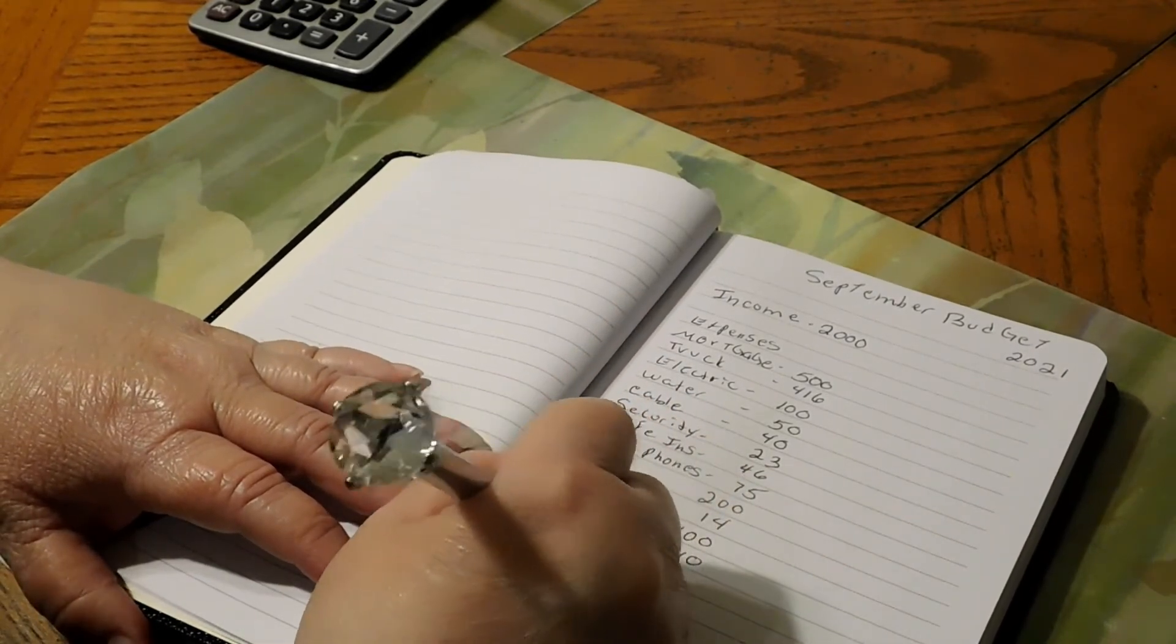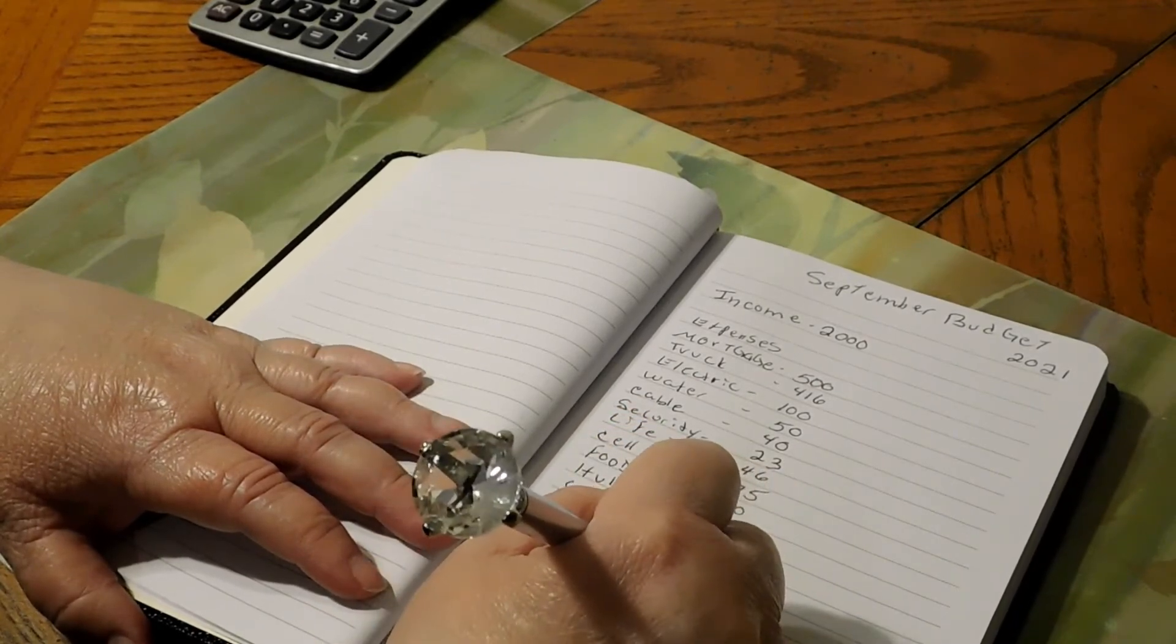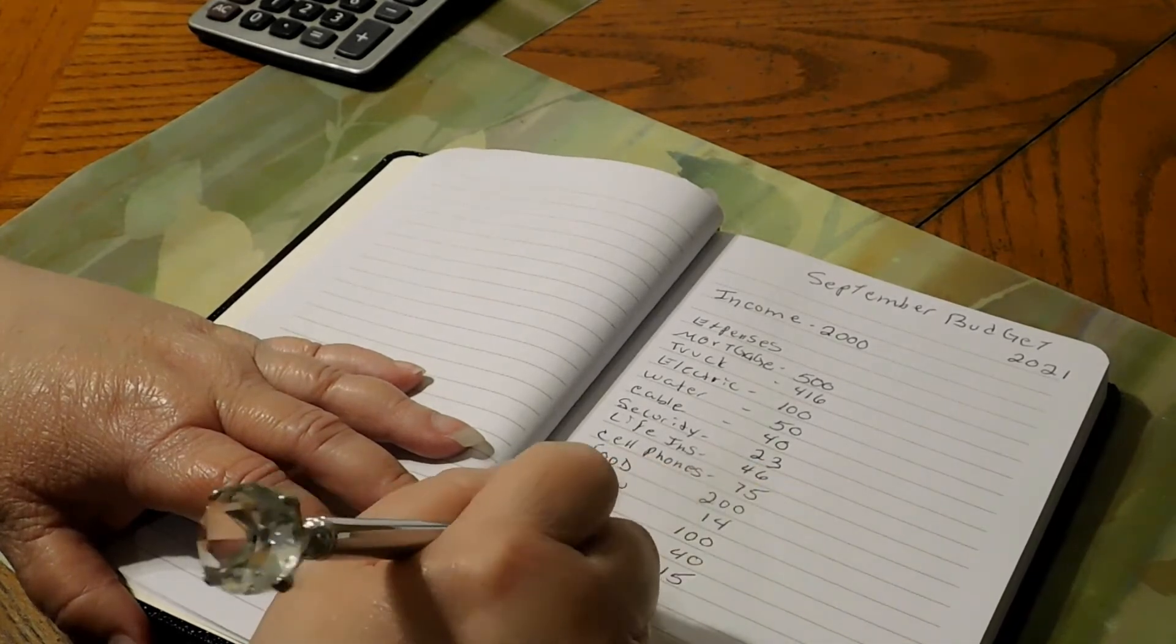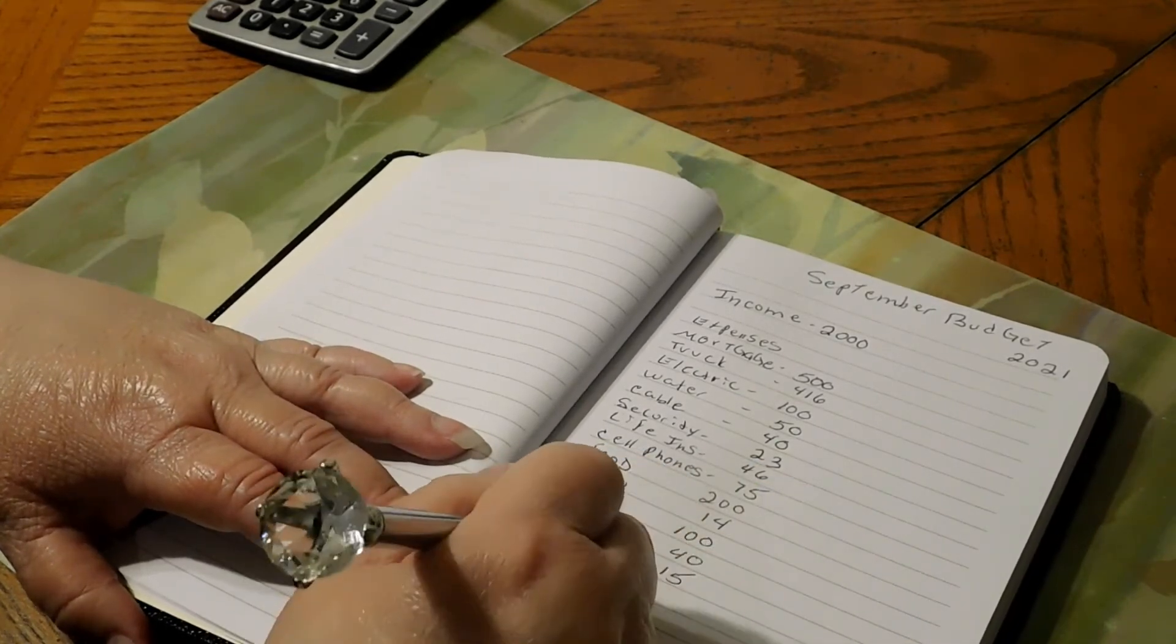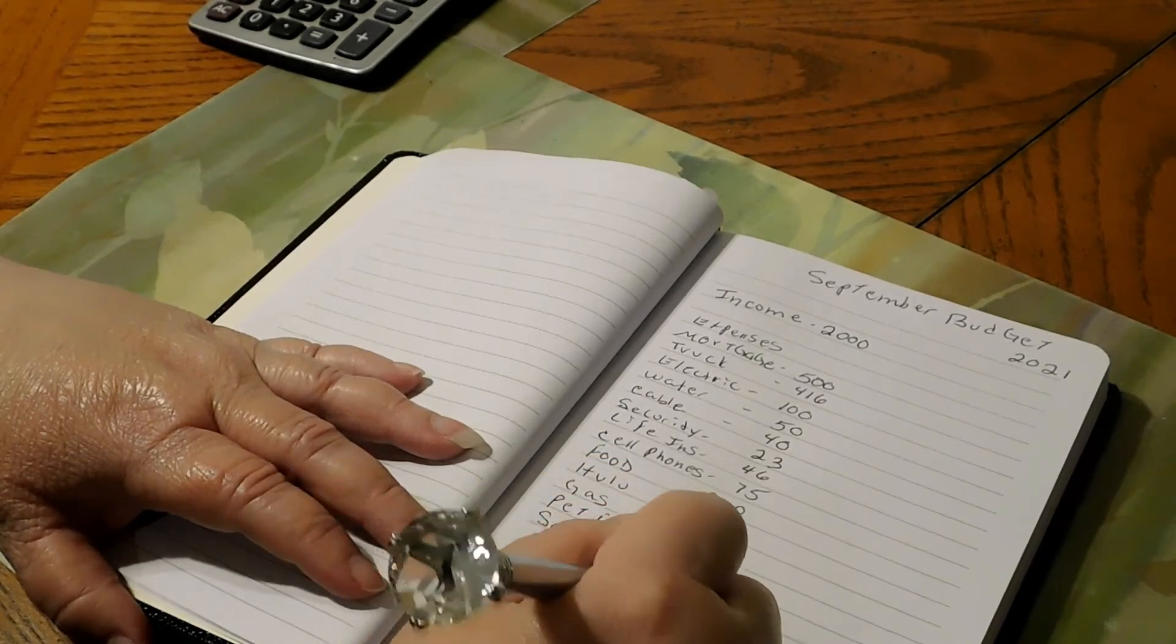We have savings. Savings is going to be $15. And then we're just going to do cash envelopes like that. That's going to be $100.